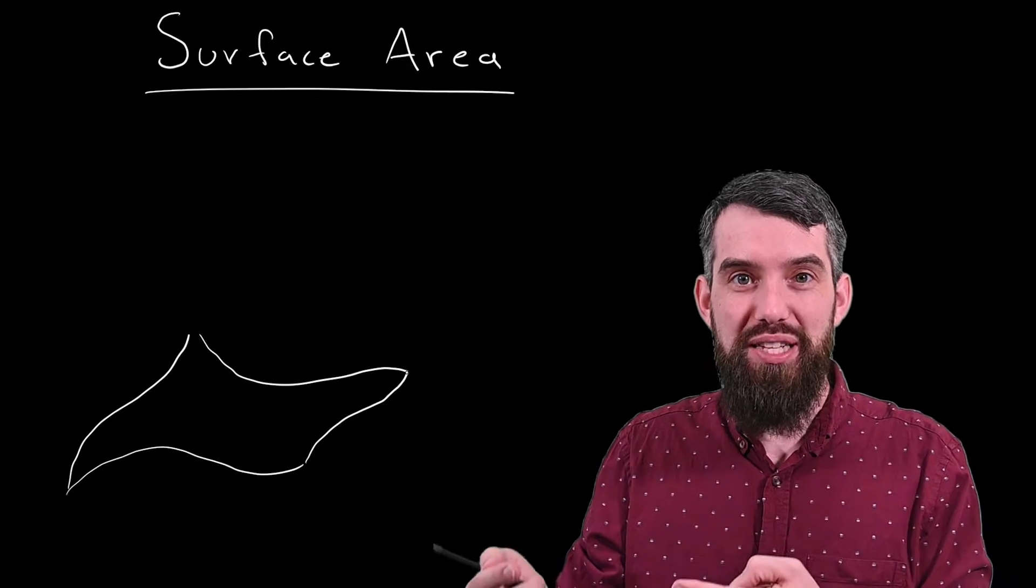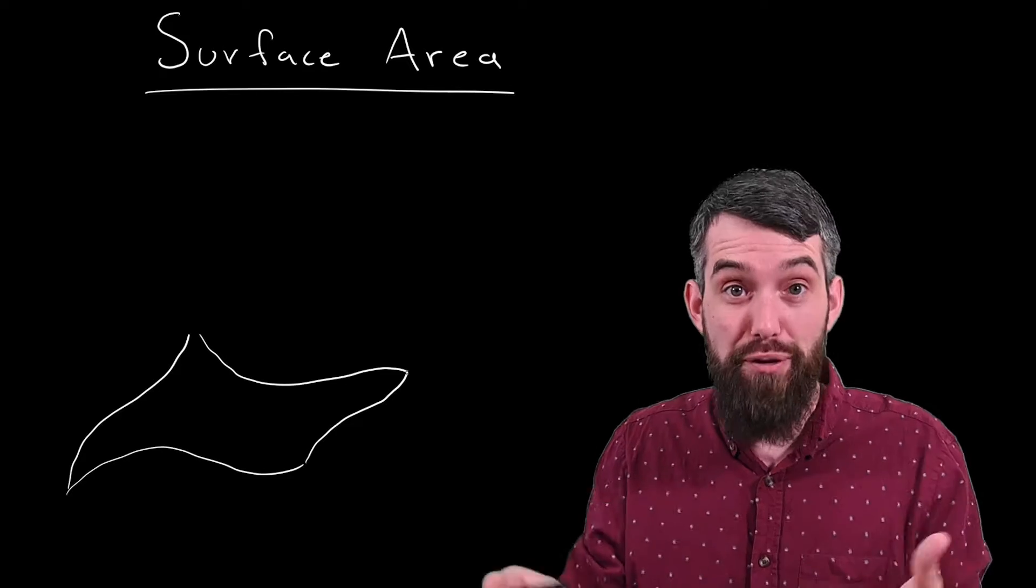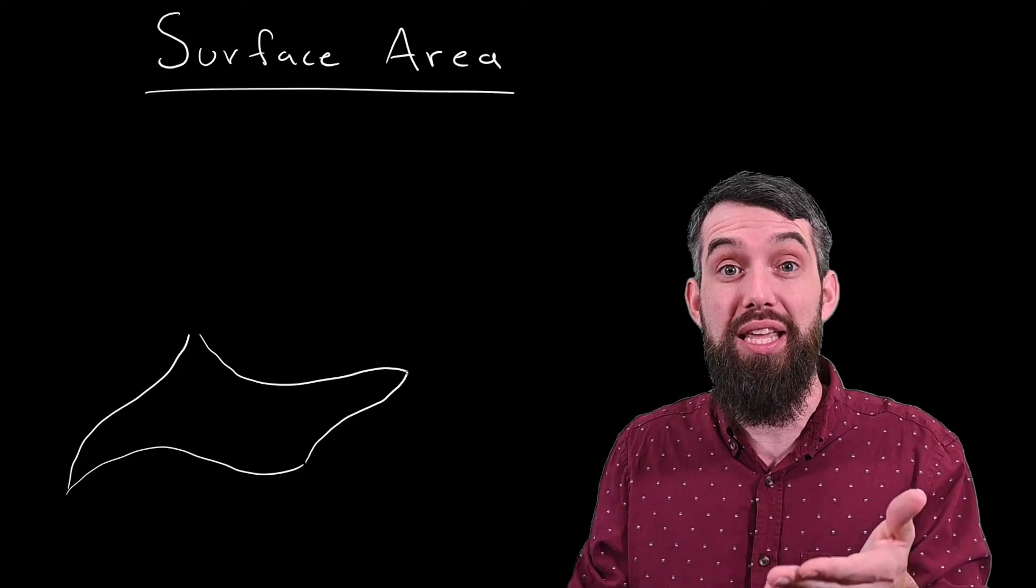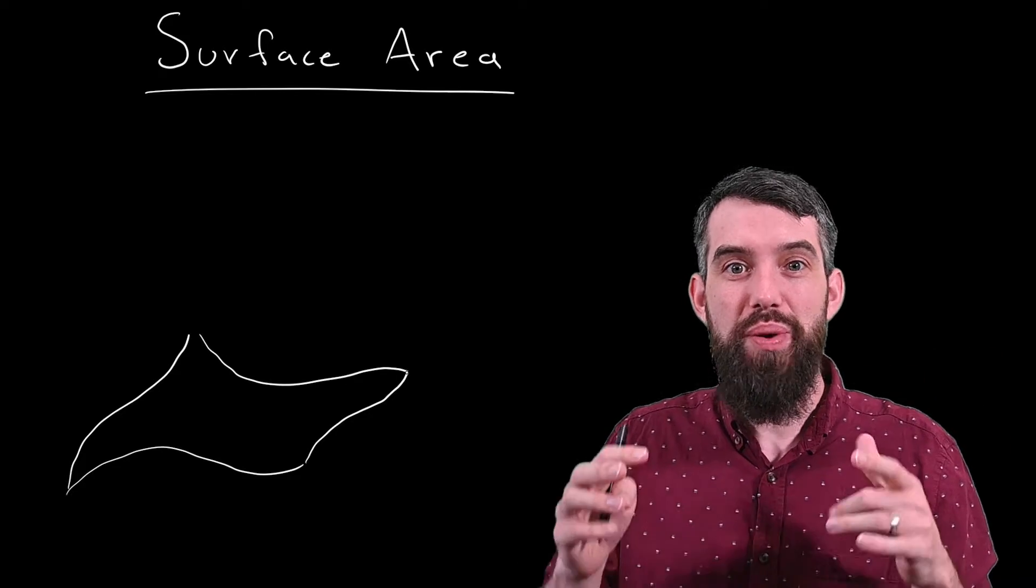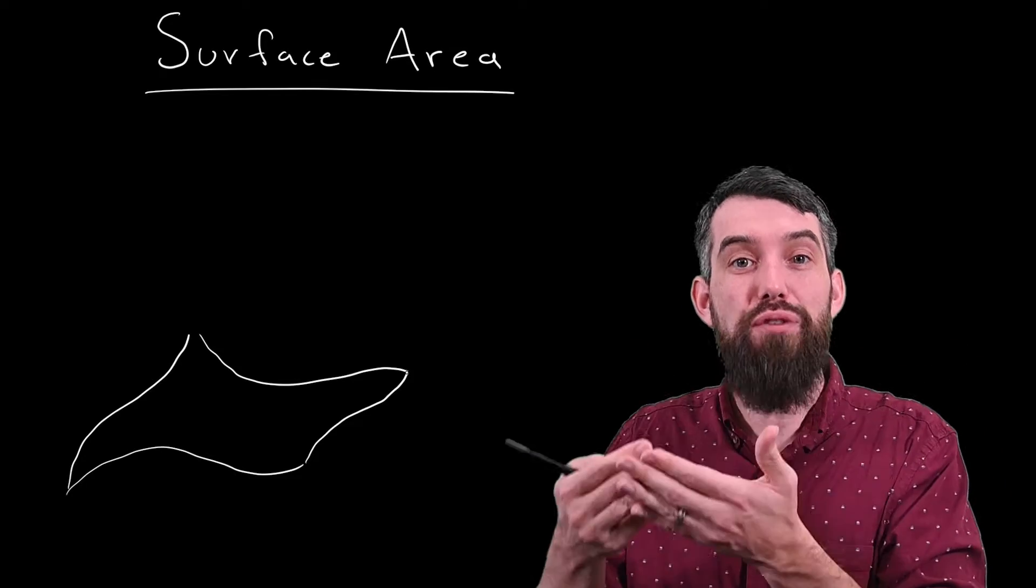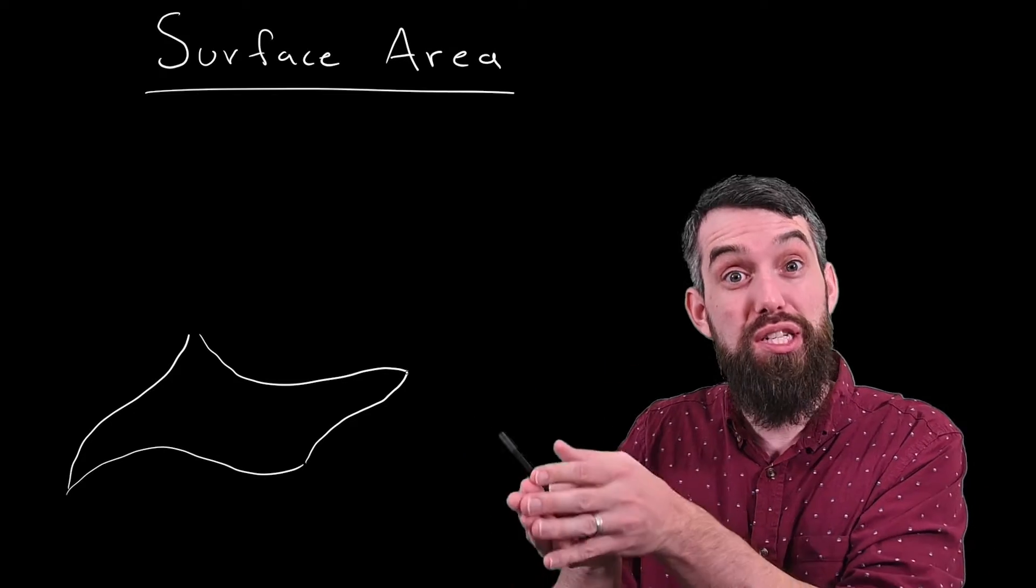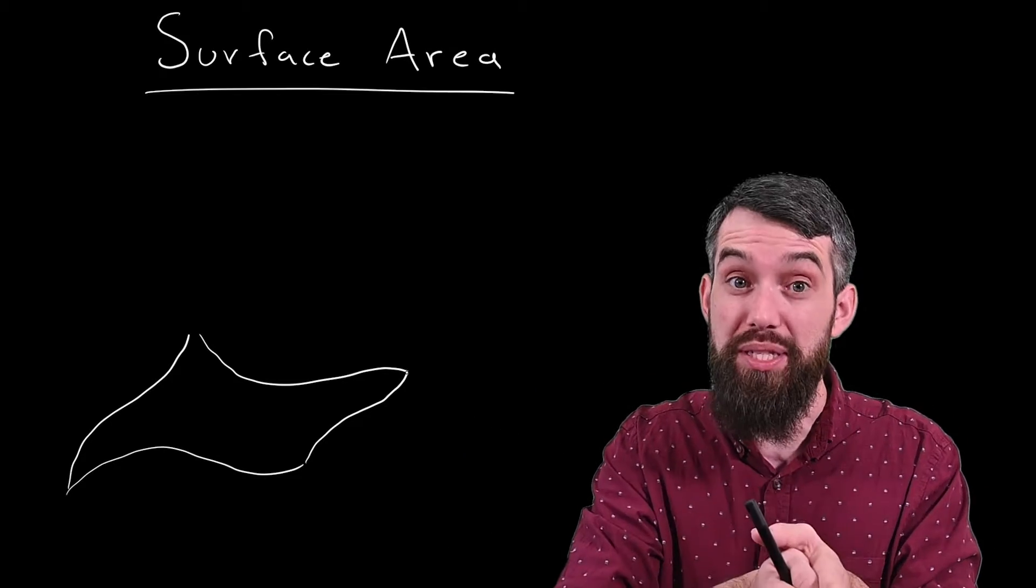In my previous video, I talked about three different ways by which we could describe a surface: explicitly, implicitly, and parametrically. So in this video, we're really going to focus on surface area when the surface is described parametrically, and then in later videos we'll talk about surface area when the surface is described explicitly or implicitly.